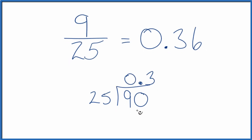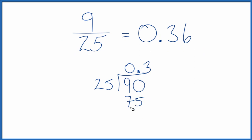So 3 times 25, that's 75. We subtract and we get 15. 25 doesn't go into 15. We'll call it 150. We're going to move over one decimal place here.